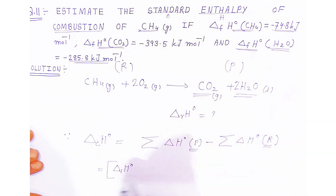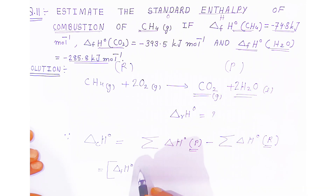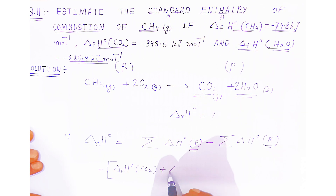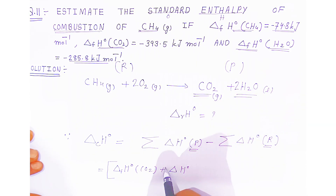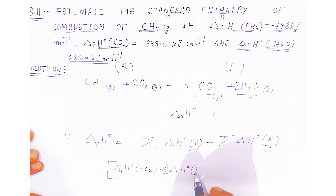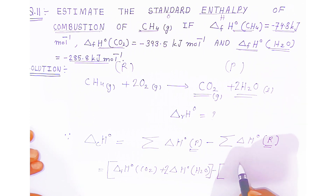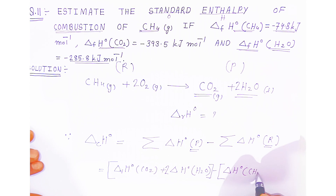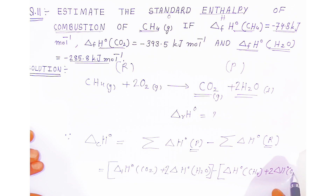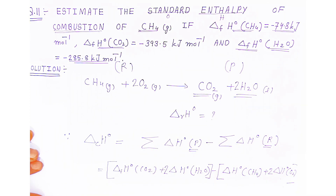Writing this out in full: ΔH°reaction = [ΔH°f(CO₂) + 2×ΔH°f(H₂O)] − [ΔH°f(CH₄) + 2×ΔH°f(O₂)]. The enthalpies of all species are given. The standard enthalpy of formation of elemental oxygen is taken as zero.